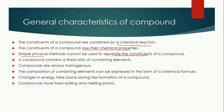The compound contains a fixed ratio of the combining elements. For example, in water, always two hydrogen atoms and one oxygen atom will be present — so this is a fixed ratio of those elements. The compounds are always homogeneous, meaning they have the same composition throughout a given sample.